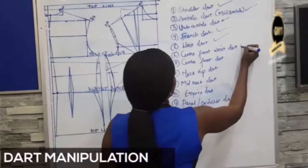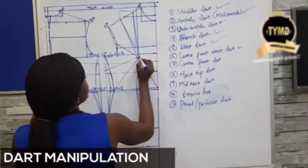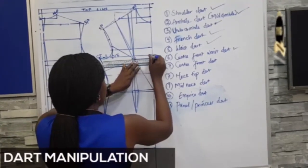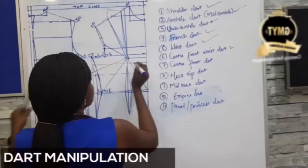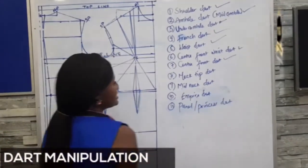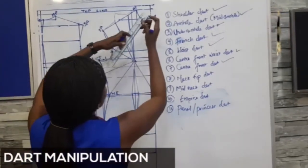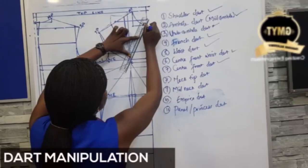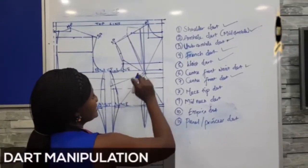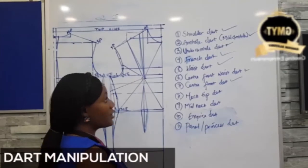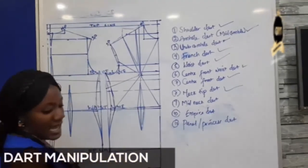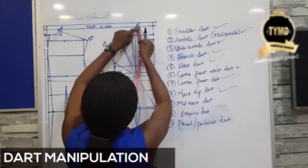The next one is my center front dart. From point X, use your ruler to rule a straight line meeting your center front. Make sure your line is straight. And that is my center front dart. The next is my neck tip dart — just as the name implies, from the tip of my neck, rule a straight line all the way to my point X. Don't forget your procedures: close your shoulder dart, cut through, place another paper, and bring back 4 cm or 5 cm. That's it for my neck tip dart. Next is my mid-neck dart. To get my mid-neck, take the measurement from your NP to your neck tip.